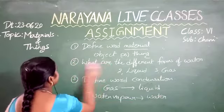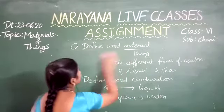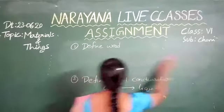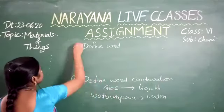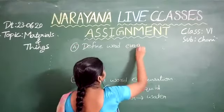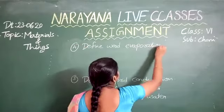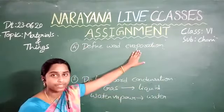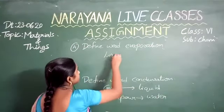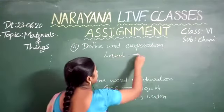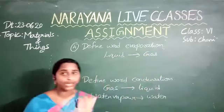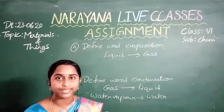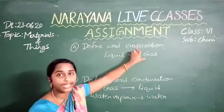Fourth question: define the word evaporation. Evaporation is nothing but the process of changing the liquid state of a substance into its gaseous state. Generally, by heating, the liquid state of a substance can be converted into its gaseous state. That process is called evaporation.